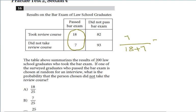7 over this. The answer would be 7 over 25. So this would be the right answer.